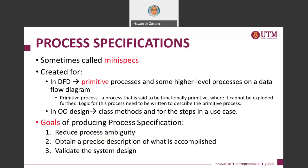What is the goal for producing a process specification? One is it can help to reduce process ambiguity. If we are not sure about something, we can look at the process specification — but of course you have to make sure it is produced correctly for it to reduce ambiguity. Next is to obtain a precise description of what is accomplished.